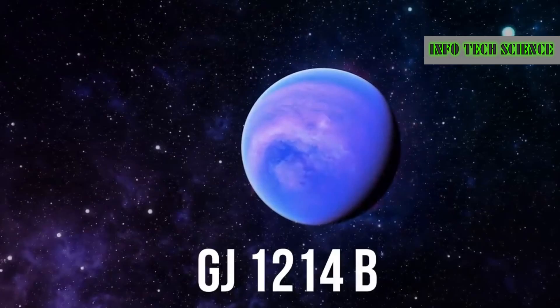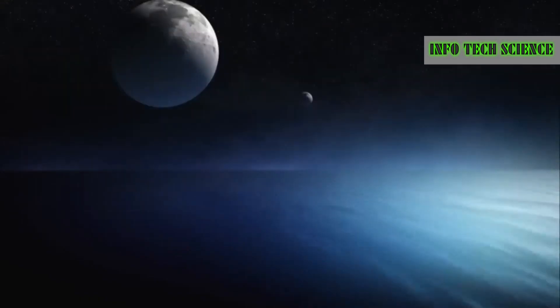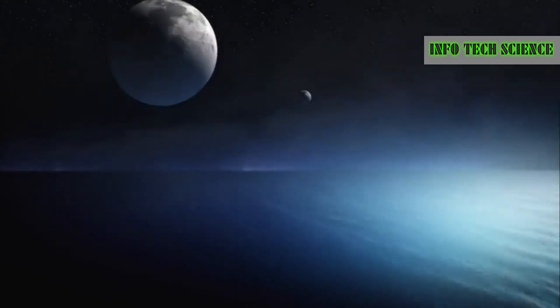Another fascinating planet is GJ 1214b, located 42 light years away. It's a water world with oceans reaching depths of up to 1,600 kilometers. Imagine the discoveries waiting for us there.